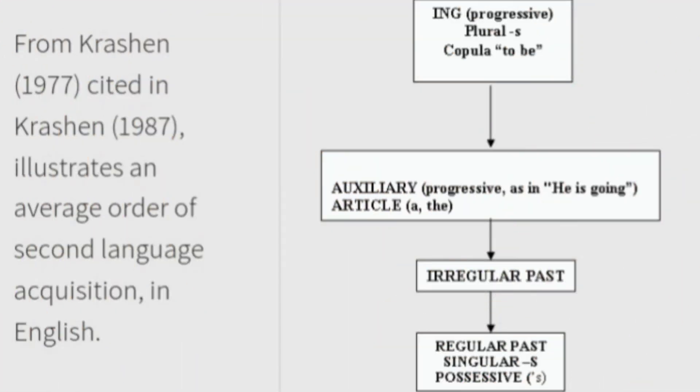From Krashen (1977), cited in Krashen (1987), illustrates an average order of second language acquisition in English.